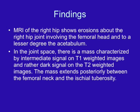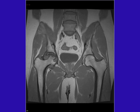The findings are erosive changes along the right hip joint involving the femoral head and acetabulum. The key finding is within the joint space itself: there is a mass characterized by intermediate signal on T1-weighted images and rather dark signal on the T2-weighted images. The mass extends posteriorly between the femoral neck and ischial tuberosity. On the coronal T1, note the diffuse joint space narrowing and the involvement of bone by this mass of intermediate signal.